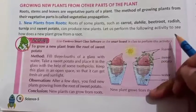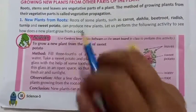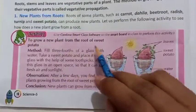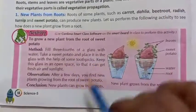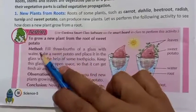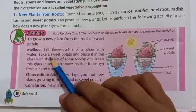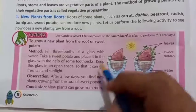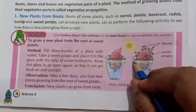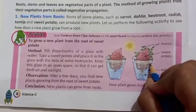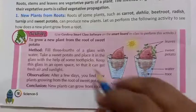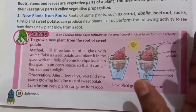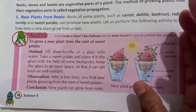Let's perform the following activity to see how a new plant grows from a root. To grow a new plant from the root of sweet potato: fill three-fourths of a glass with water, take a sweet potato and place it in the glass with the help of some toothpicks. Keep this glass in an open space so that it can get fresh air and sunlight.